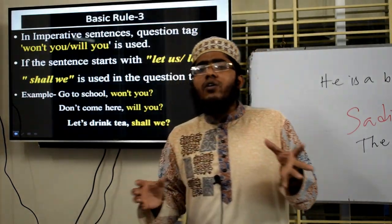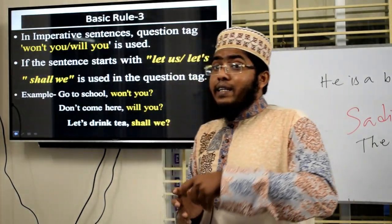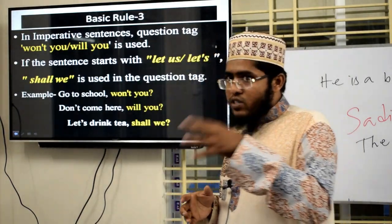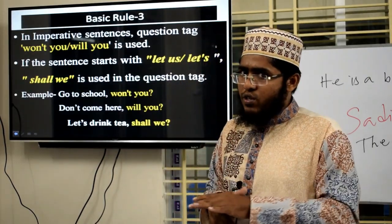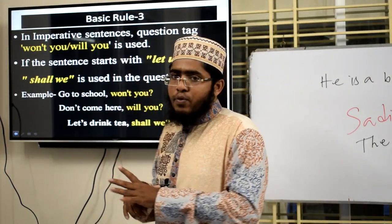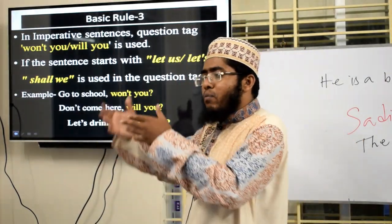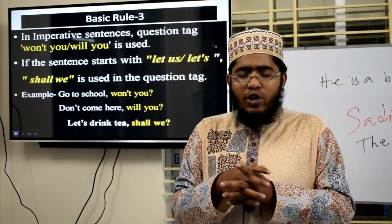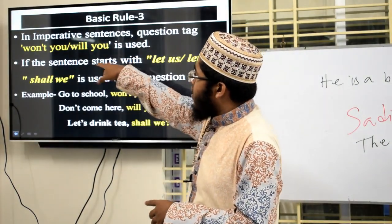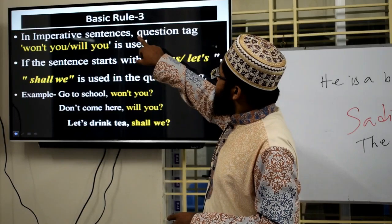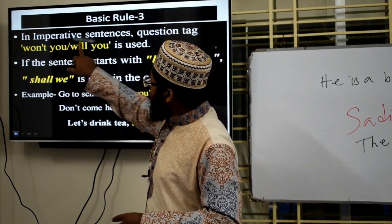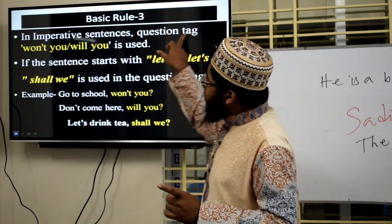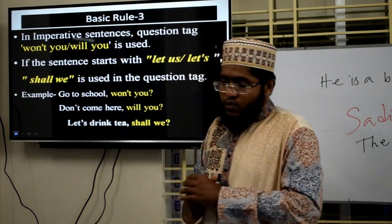Basic rule three is about imperative sentences. In an imperative sentence, if the sentence is positive, we use 'won't you'. And the subject will always be 'you'. In modern usage, we can use 'will you' for both positive and negative imperative sentences. So in imperative sentences, the question tag 'won't you' or 'will you' is used.